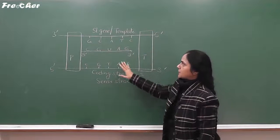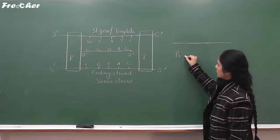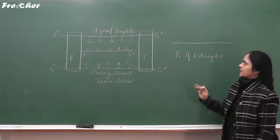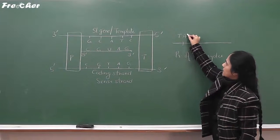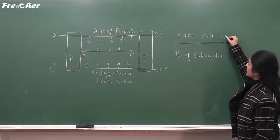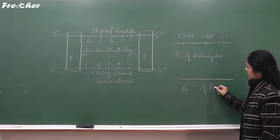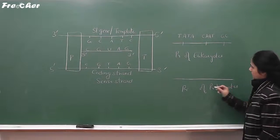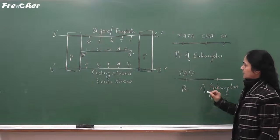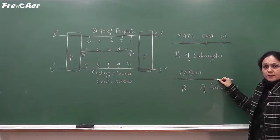The promoter of prokaryotes has two conserved sequences. One conserved sequence is known as the TATA box, where the sequence TATA is repeated many times. The second sequence you will study later in the chapter on the operon.